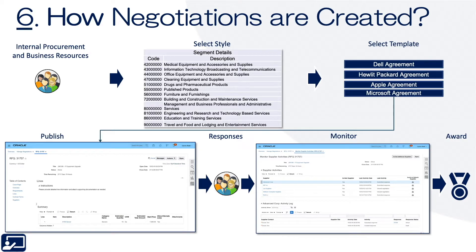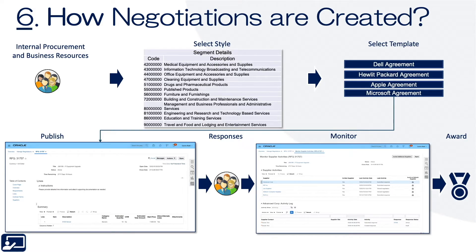Next, you select a template. A template is either something we've created or a prior negotiation we want to reuse. You reuse the lines, the suppliers, the instructions, everything — and you can edit them. It's a great tool when you want to negotiate with the same suppliers, or if you want your negotiations to parallel legal document types like professional services, hosting, user license goods, or public works.